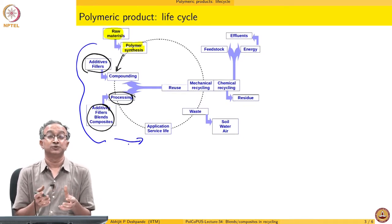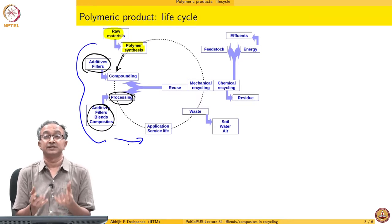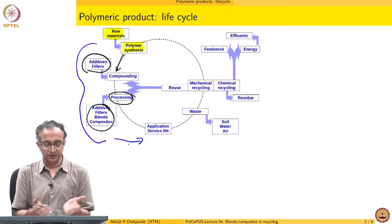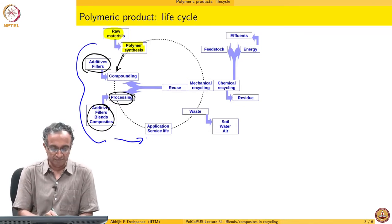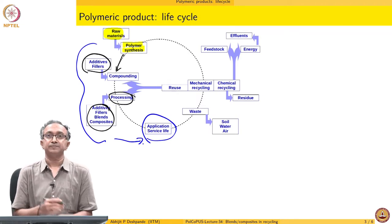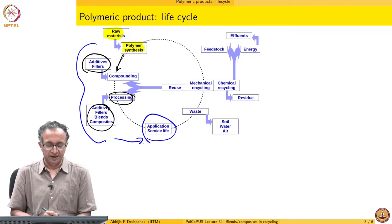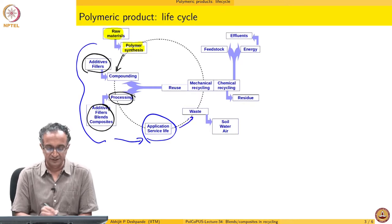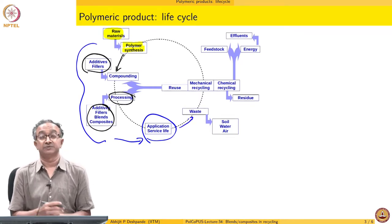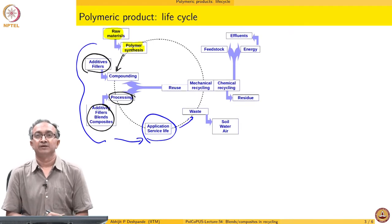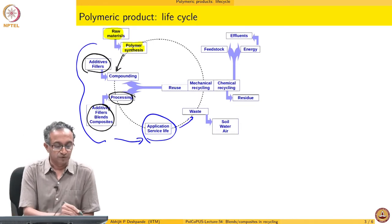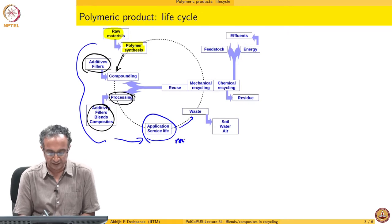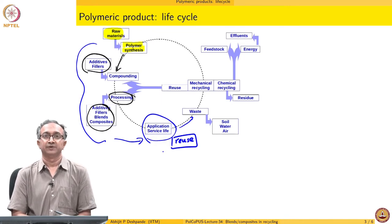Having done these operations — synthesizing the polymer, compounding it, and processing it — we finally send it for an application. In the case of single-use plastic, this application window is just a single use. In many other cases, the service life may be years. Depending on the application, the service life may be large or small. Post this service life, we have several options. Since the service life is over, it can become a waste material. Reuse is a definite possibility, which can reduce the amount of material going to waste.